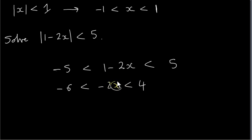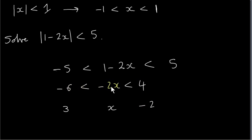We want to isolate x, so we divide this inequality by minus two. Minus six divided by minus two is plus three; minus two x divided by minus two is plus x; four divided by minus two is minus two. Because we divided everything by a negative number, we change the direction of the inequalities. We would normally write this the other way around: minus two less than x less than three.